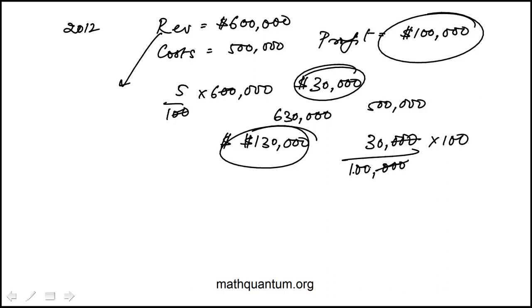And you will see that this turns out to be 30%, which is choice D.